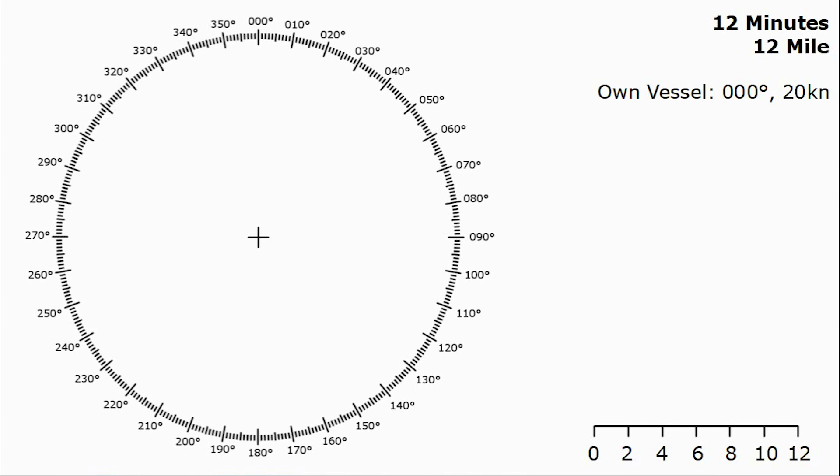Our own vessel we're going to be going due north at 20 knots. I've chosen 000 just because it makes the numbers easier. 20 knots means 20 nautical miles in one hour, so dividing by 5, we cover 4 miles in 12 minutes. This gives us the length of our vector. We can place on our own vector pointing due north corresponding with our course, and the length corresponding with 4 miles which indicates our speed.